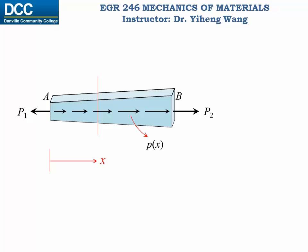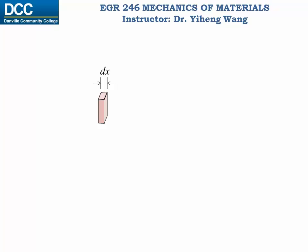Let's pick an arbitrary location at x, and look at a differential element with the length of dx at this location. If we isolate this differential element and draw a free body diagram of it, it is held in equilibrium by the forces Nx, which is the internal normal force at this location. Under these forces, the differential element elongates by a small displacement d-delta. According to the definition of normal strain, epsilon equals the change in length d-delta over the original length dx.